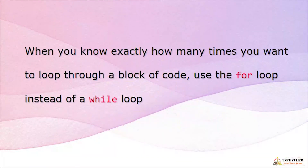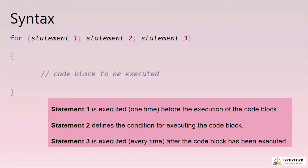Looping statements — the for loop. When you know exactly how many times you want to loop through a block of code, use the for loop instead of a while loop. Syntax: for(statement1; statement2; statement3). Statement 1 executes before the code block once; statement 2 defines the condition; statement 3 executes after each iteration until the condition fails.